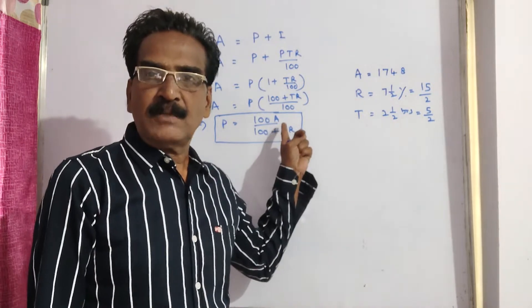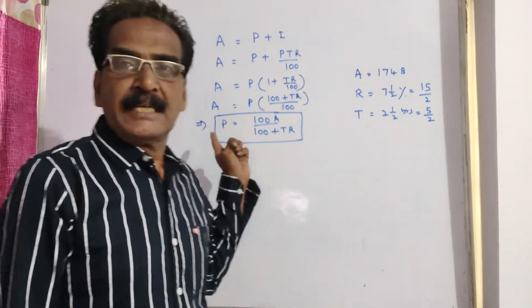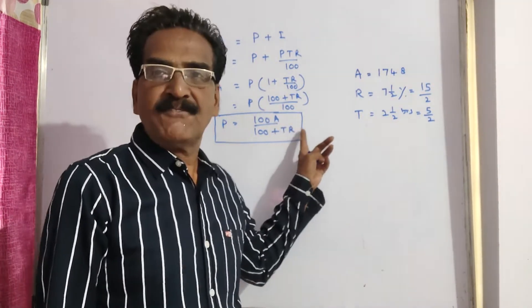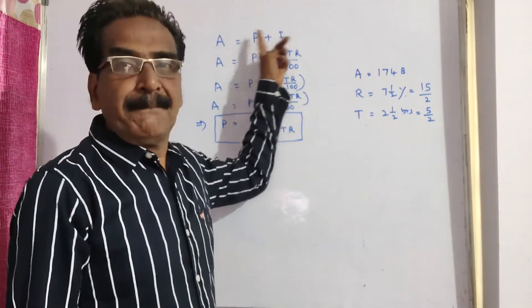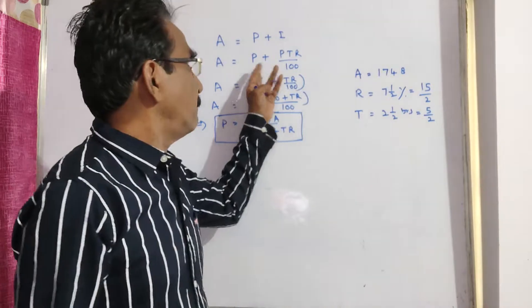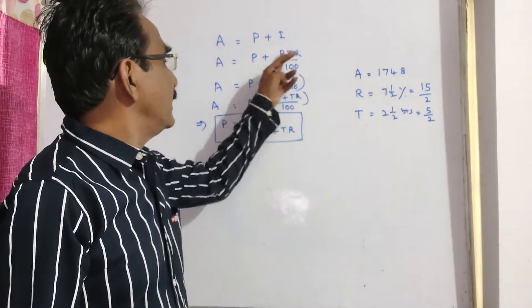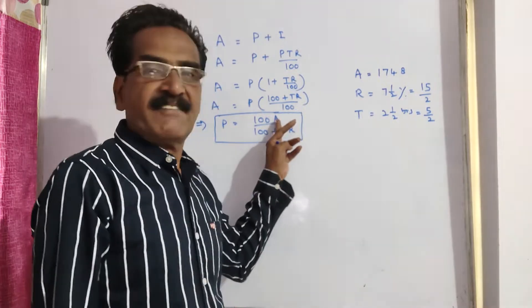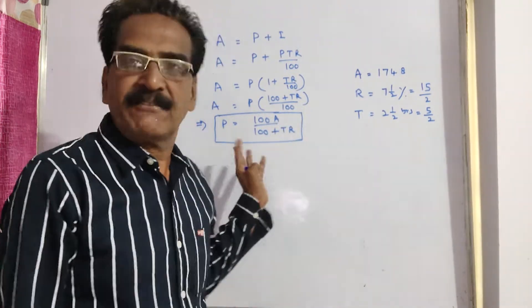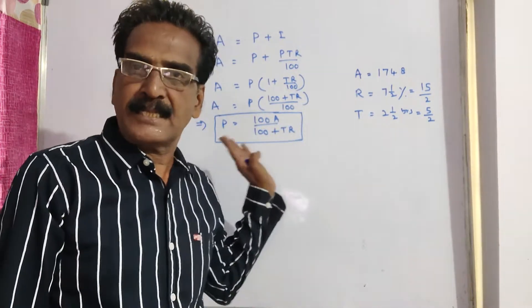See friends, when amount is given, you can find the principle by applying this formula. Simple interest amount is equal to P plus I, principle plus interest, P plus PTR by 100. And from this we can derive this formula. So when A is given, that is amount is given, we can find the principle by applying this simple formula.